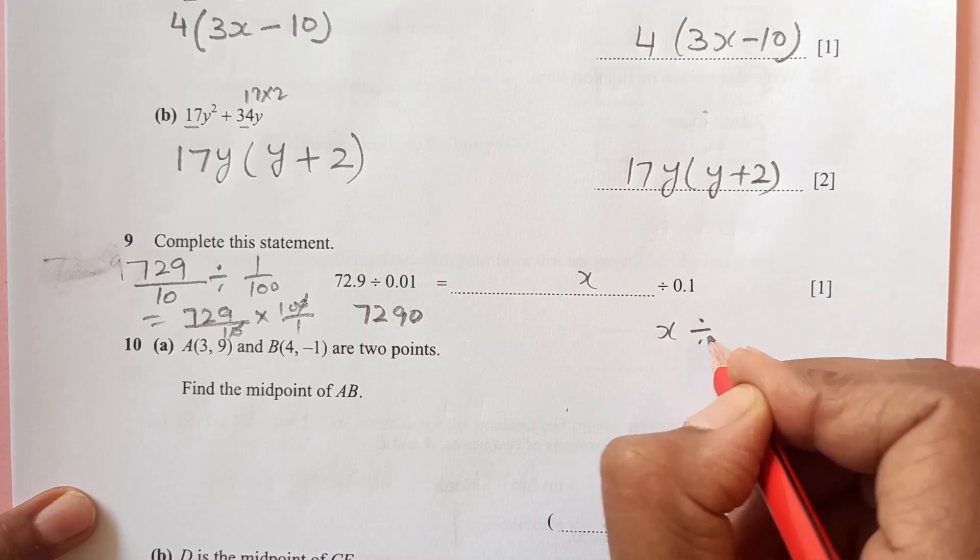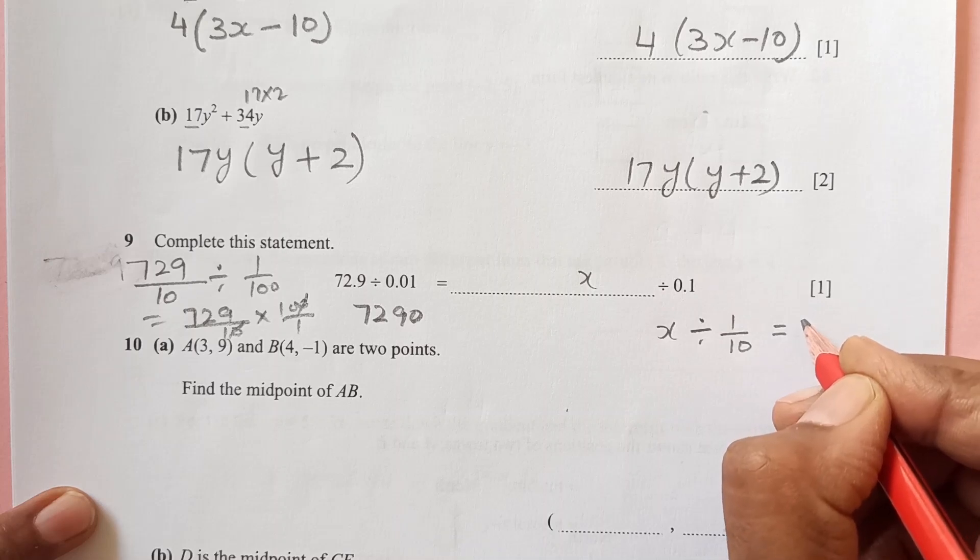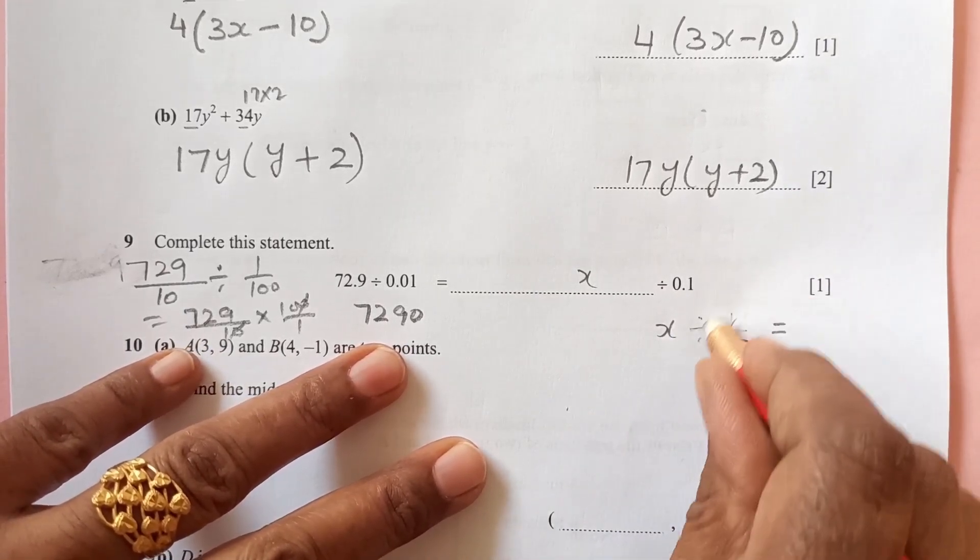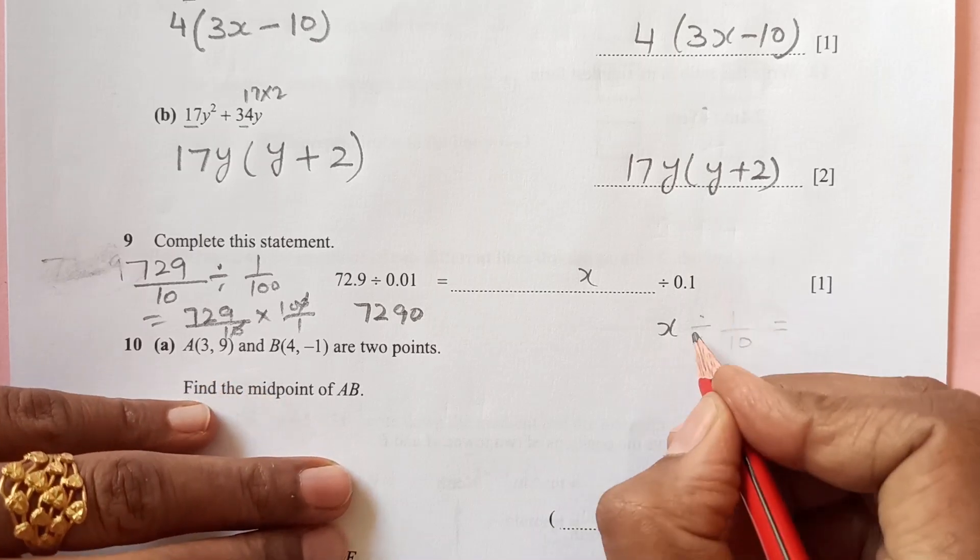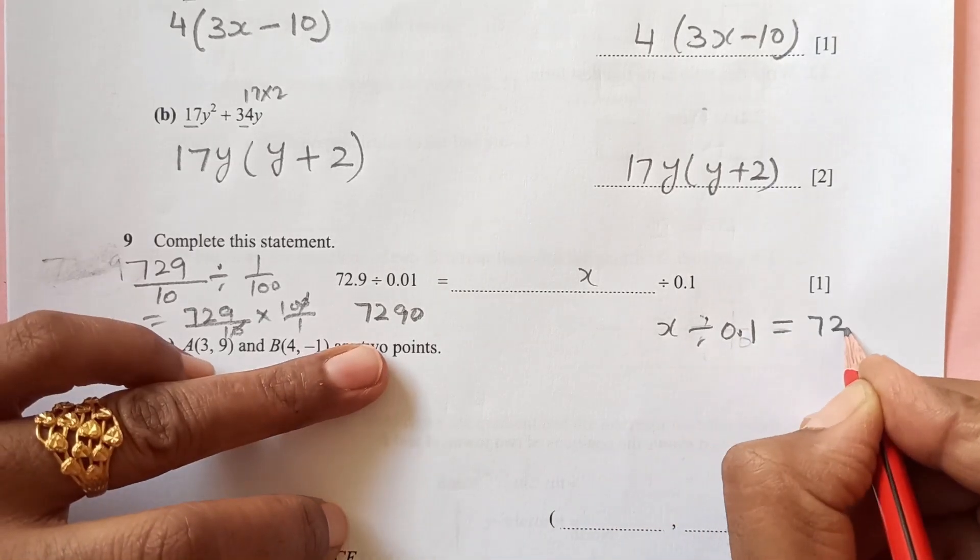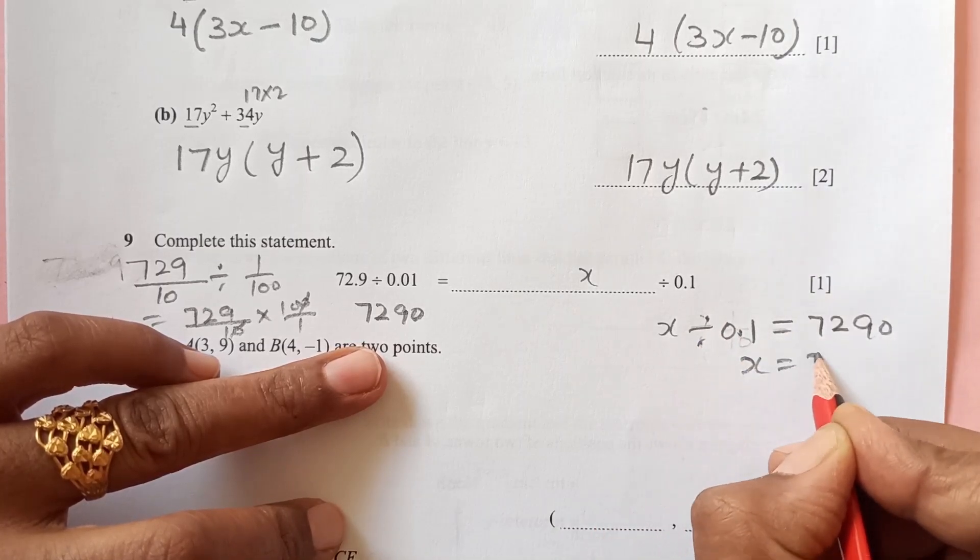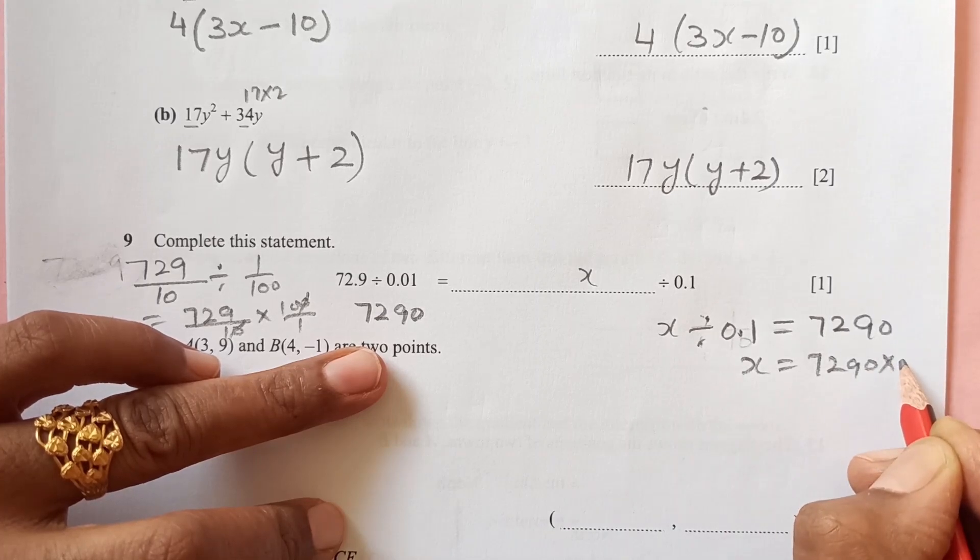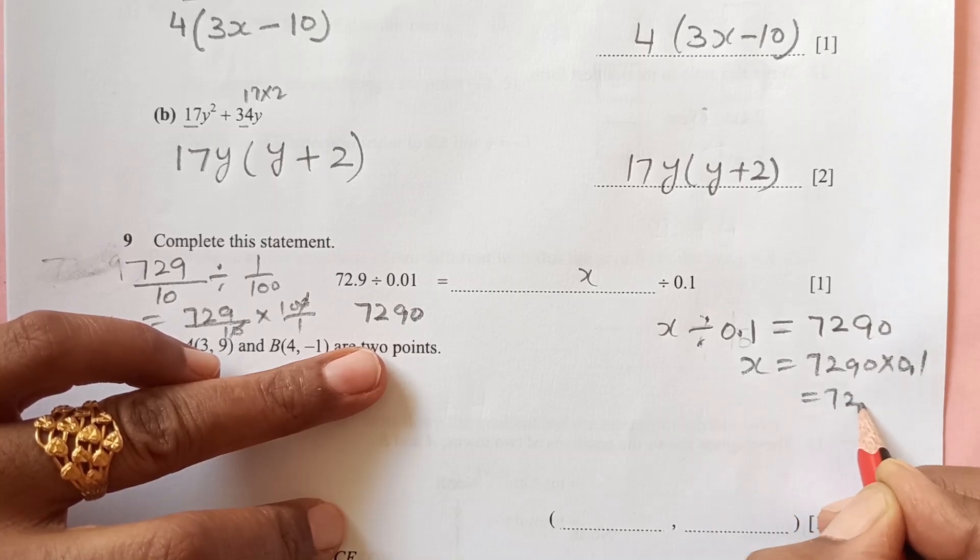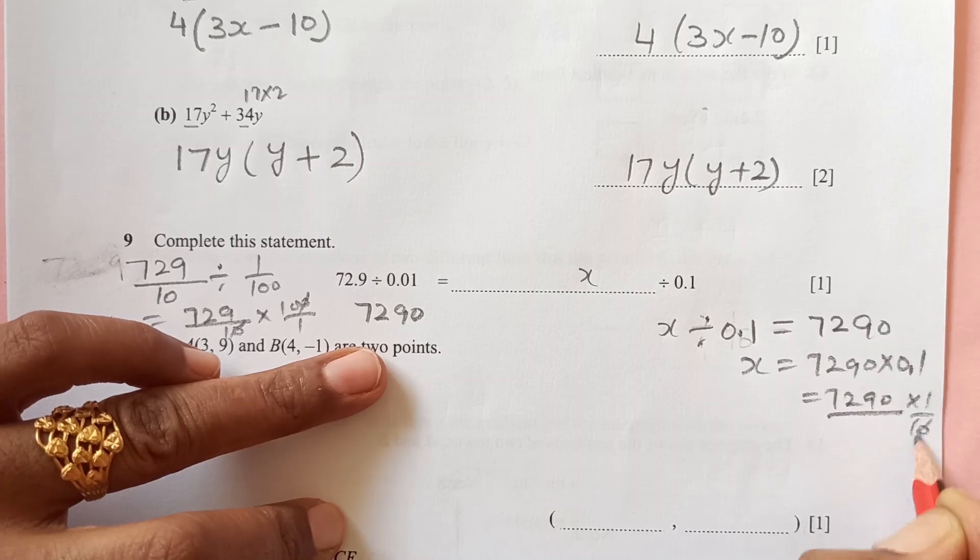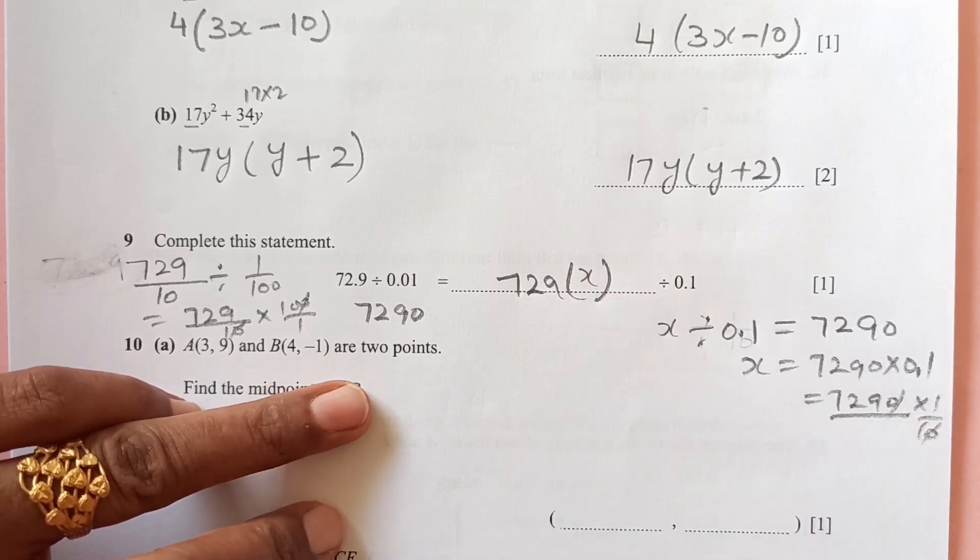Now this answer is supposed to be x divided by 0.1 equals 7290. So x divided by 0.1, when you take this to the other side, 7290 times 1 over 10, this 0 and 0 is gone, so your answer is going to be 729. So the value is 729.